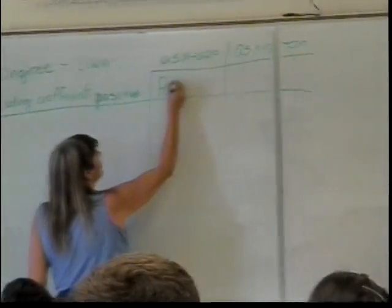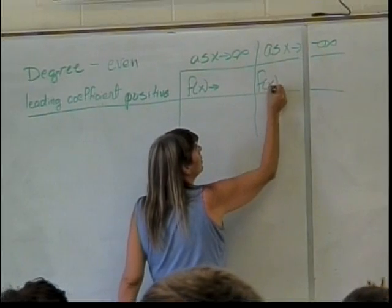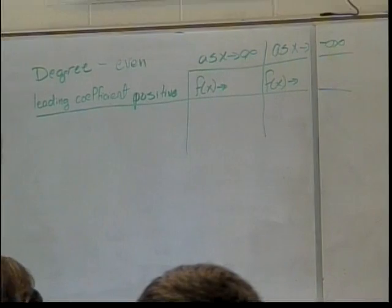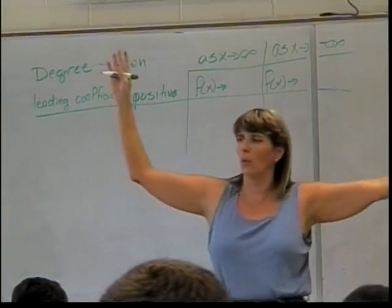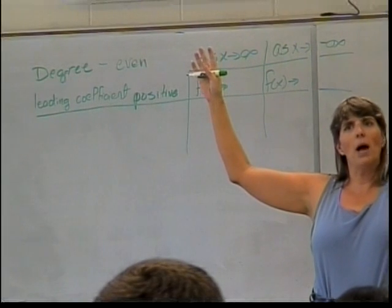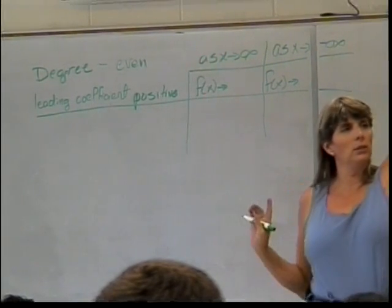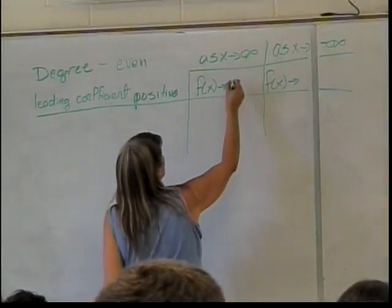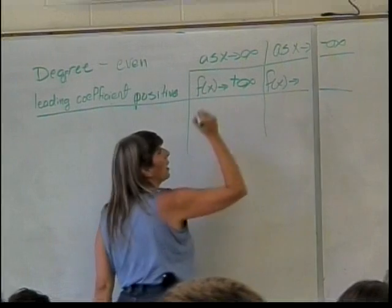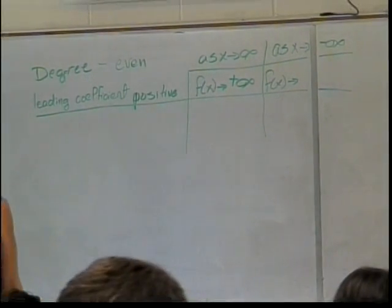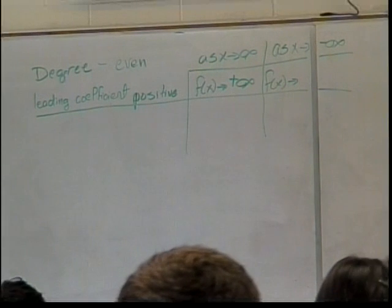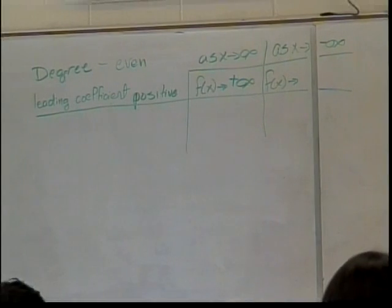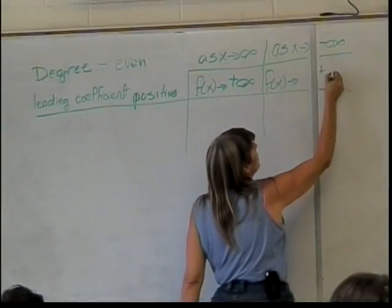So what happens to the function? Where does it go? So I have an even degree of positive leading coefficient. What happens to my function as I'm heading off over to the right here? Where is it going? Up. How do I describe what's up? Positive. Positive what? Infinity. Positive infinity. So I head off to positive infinity. By the way, the plus sign is not necessary. As I'm going off into the negative direction, what's happening to my graph? I'm also going up. Again, I'm going to positive infinity.